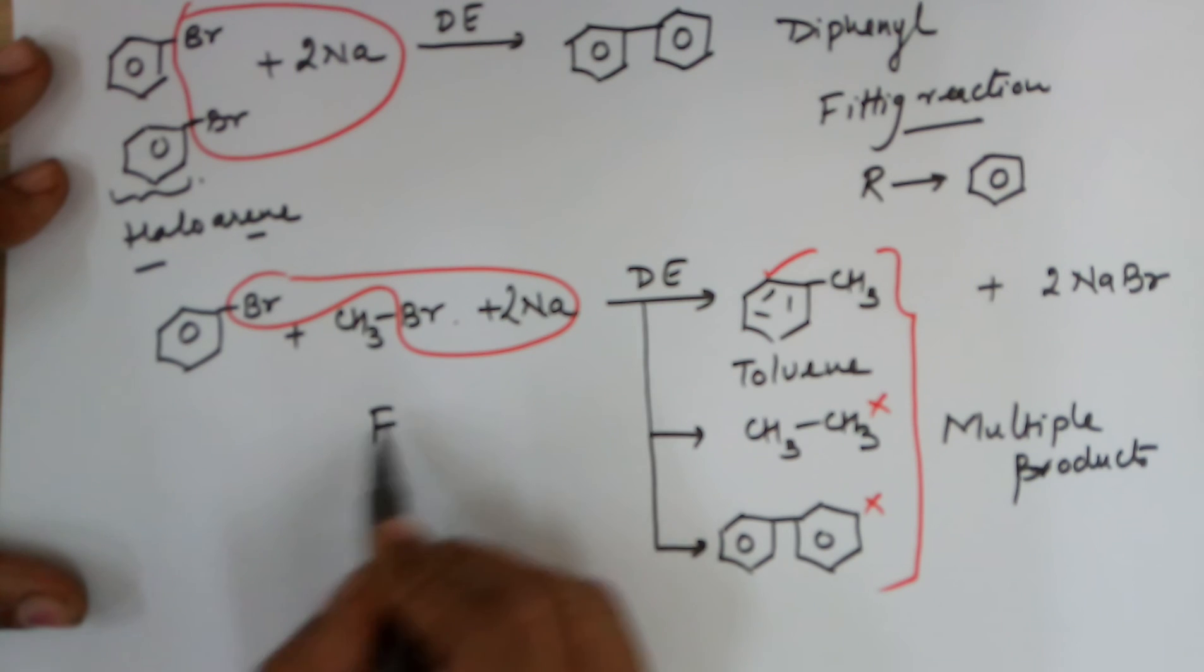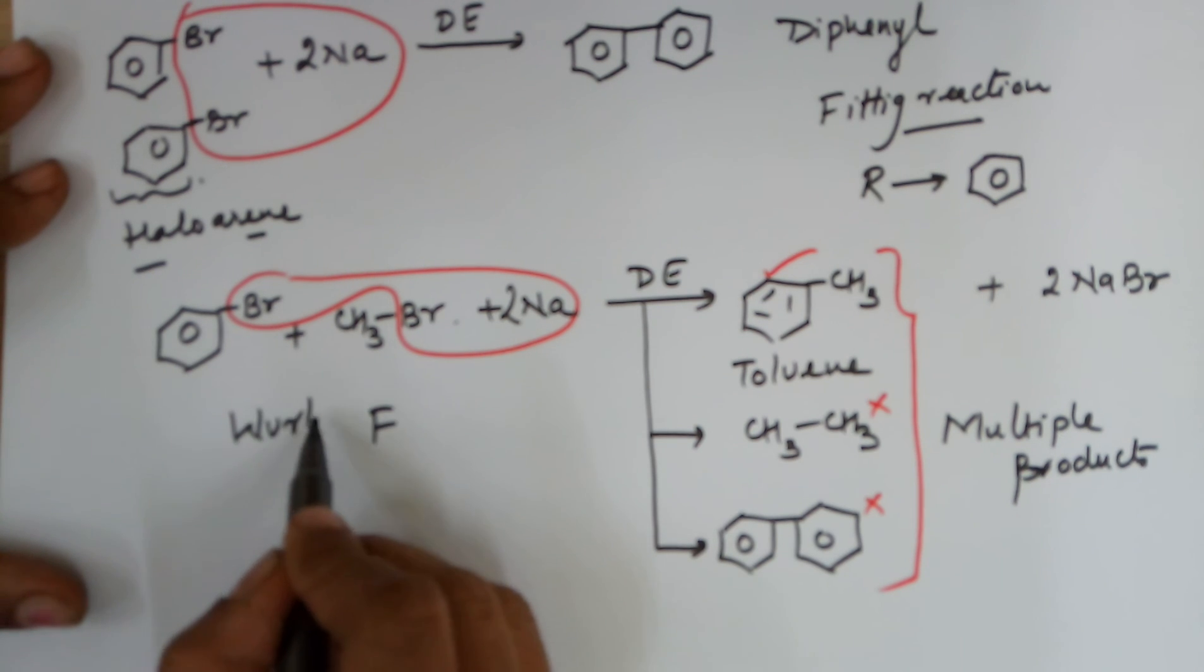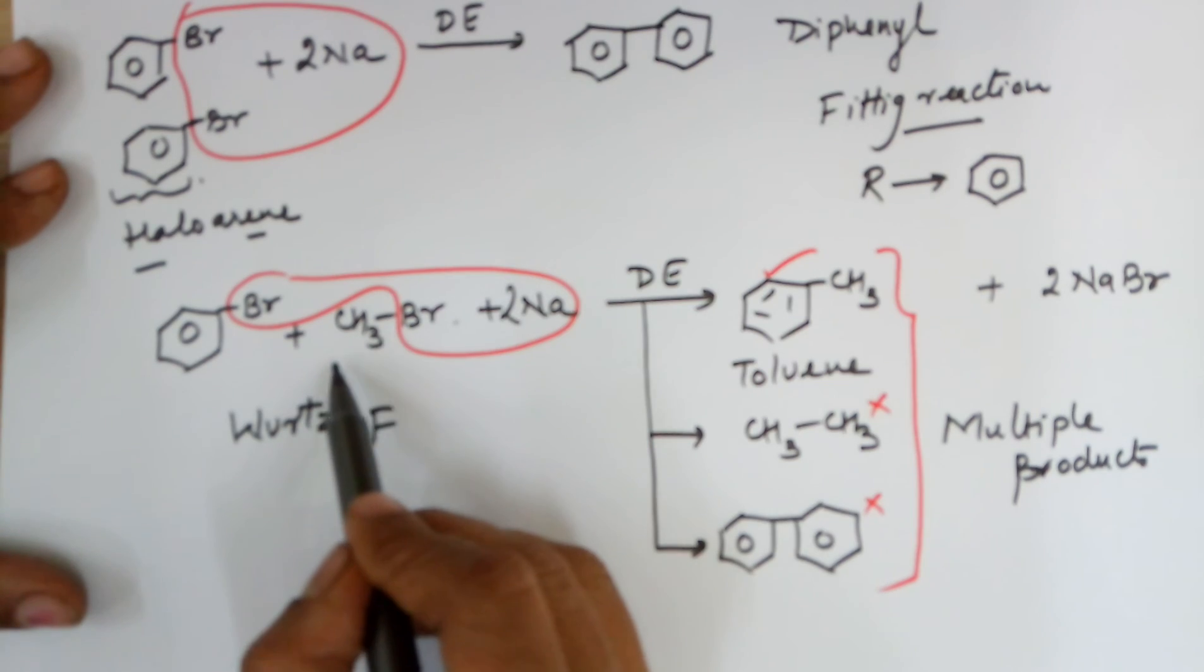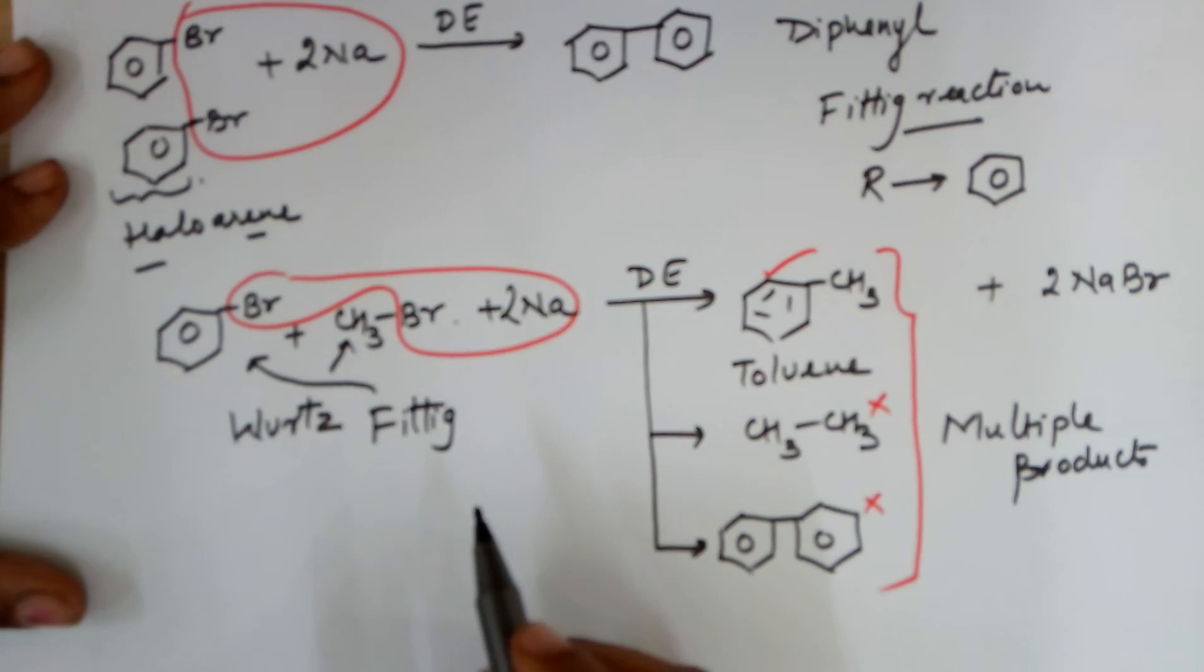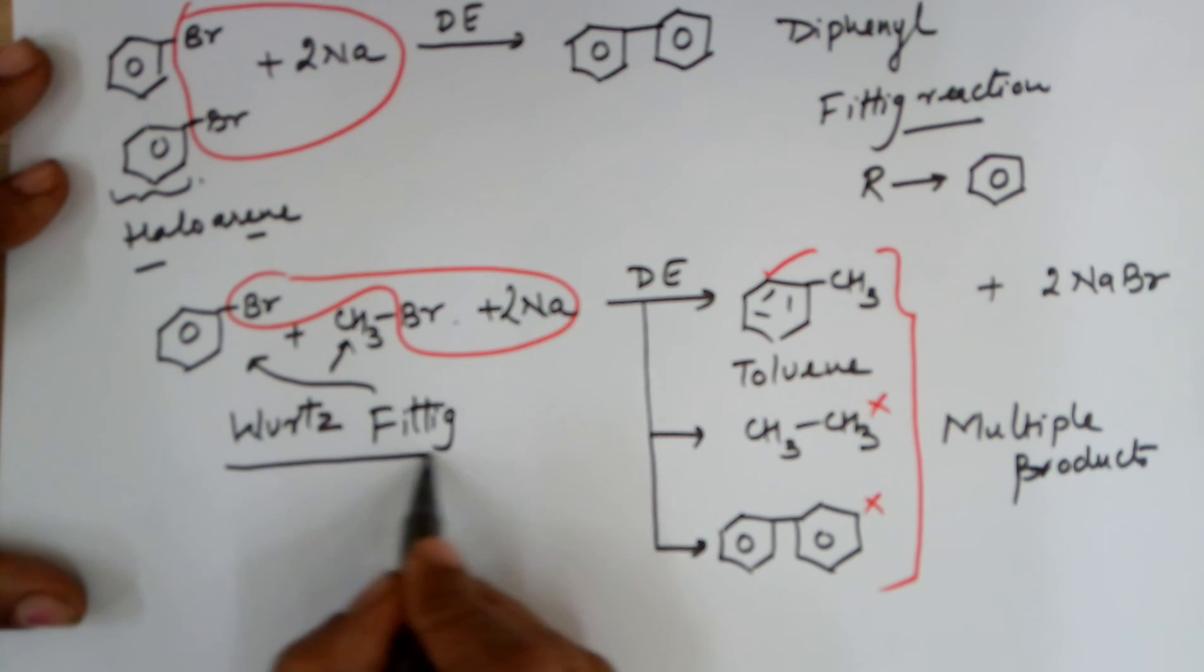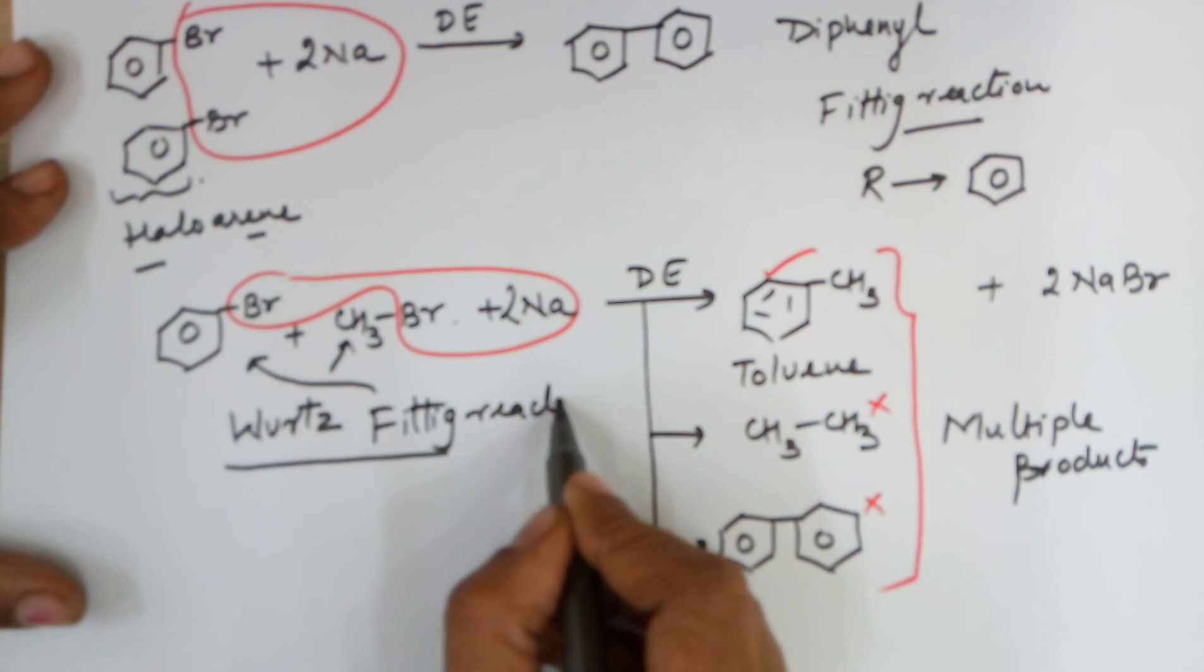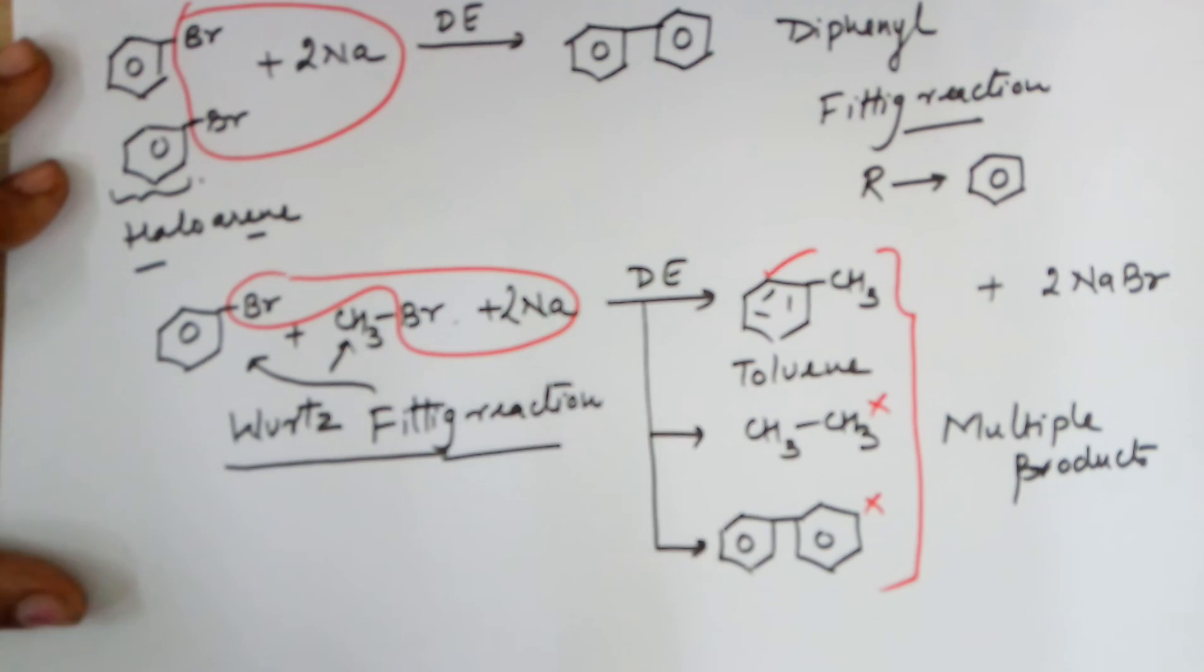This reaction is known as Wurtz since you are using an alkyl R group, as well as Fittig since you are using the benzene ring. Hence it is called the Wurtz-Fittig reaction. Thank you.